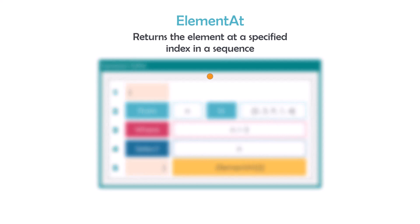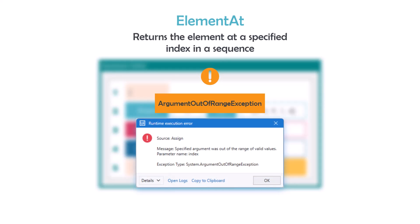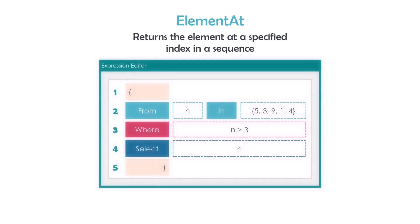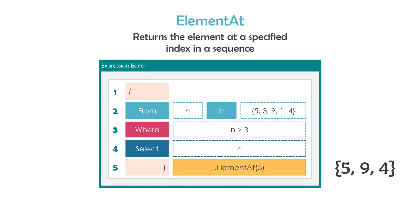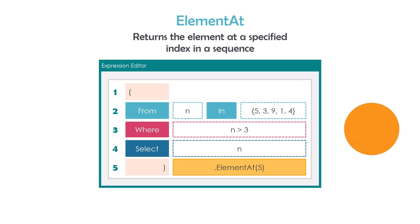Using this operator we could get the following exception: ArgumentOutOfRangeException. This appears if I am using an index which doesn't exist in the sequence. For example, this query returns three numbers, so we only have indexes from 0 to 2. If I use ElementAt with index 5, an exception of type ArgumentOutOfRangeException will be thrown.